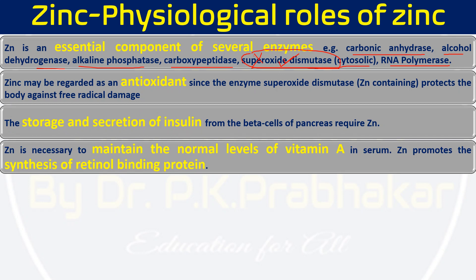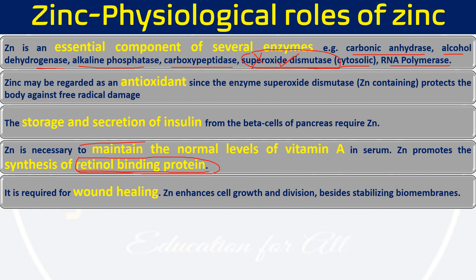Zinc is necessary for the maintenance of normal levels of vitamin A in the serum, because zinc promotes increased expression of retinol binding protein. This retinol binding protein helps in the absorption of retinol from the intestine. Because of zinc, we have high concentration of this protein expression, and this protein is responsible for vitamin A absorption.